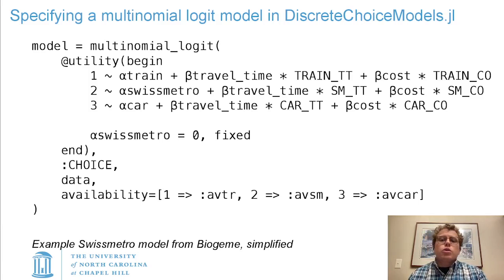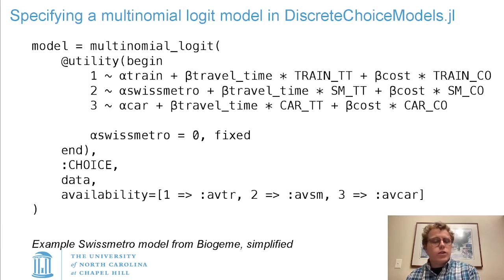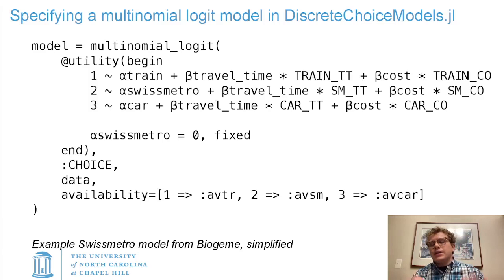Anything that starts with an alpha or a beta is assumed to be a coefficient to be estimated, and other things are assumed to be variables to be pulled out of your data set. I've specified three alternative-specific constants, and because the utilities are only meaningful relatively, you need to constrain one of those. So here I've set the starting value for the Swiss Metro constant to zero and set that as fixed — it's not going to be estimated, just held at zero.